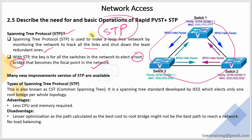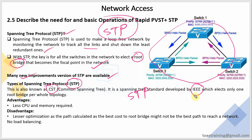That is the job of STP protocol. Many new improvement versions of STP are available. We will learn about all those versions. Starting with Spanning Tree Protocol, also known as Common Spanning Tree (CST). The spanning tree standard is developed by IEEE, and it elects only one root bridge per whole topology.